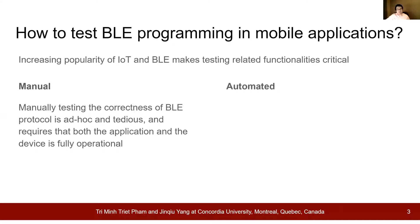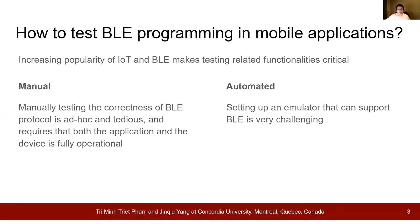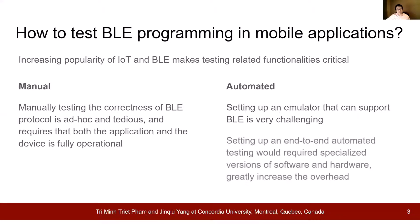The second approach is to set up an emulator, which does not require a functional hardware component like in the first approach, and allows for some automated elements. However, these emulators are hard to set up and can usually test only very small changes. The third approach is to set up an end-to-end automated testing system. While this allows a large degree of automation, it requires specialized versions of the hardware and software, which would greatly increase the overhead of the project.